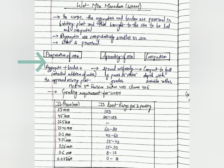The grading requirement for WMM is given as per MoRT&H fifth revision, Section 400, Clause 406. There is only one grade for WMM. The sieve sizes range from 53 mm to 0.075 mm, with a specified limit range for percentage passing. Test results must lie within the IS limit range.